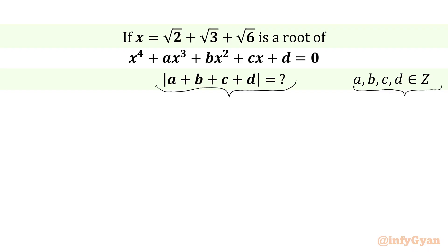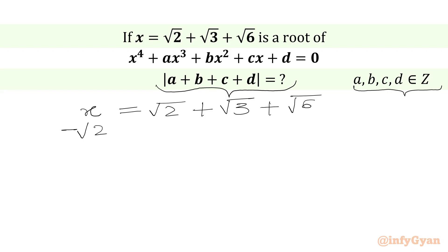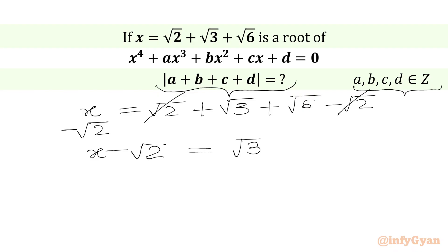Let us get started by writing x equal to square root 2 plus square root 3 plus square root 6. Now we will subtract square root 2 from both sides, cancelling plus and minus square root 2 from the right hand side. So we will get x minus square root 2 equal to square root 3 plus square root 6.